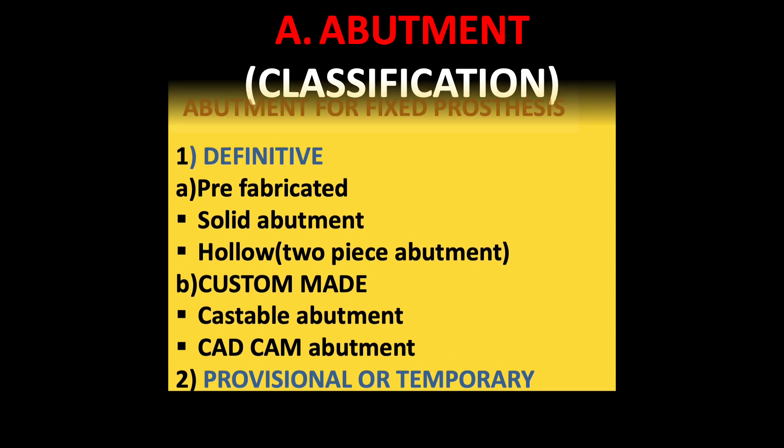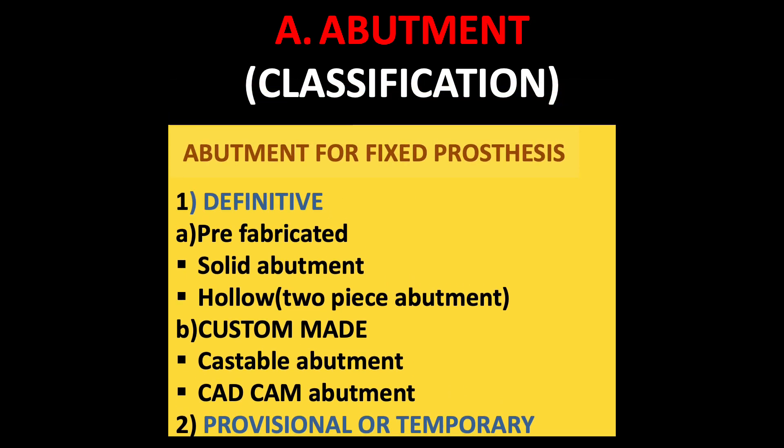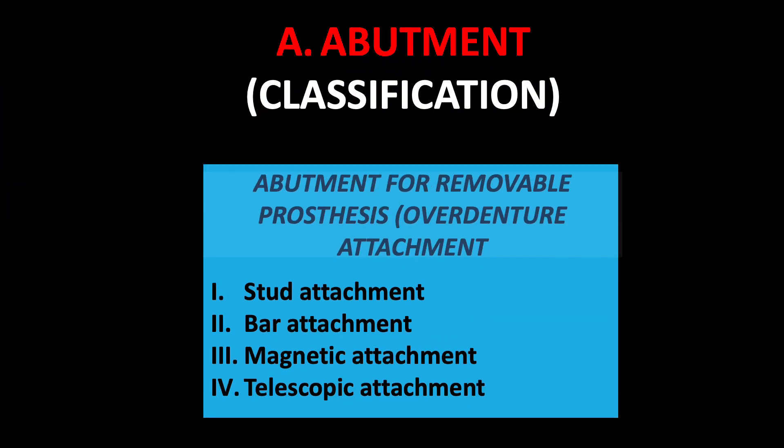Now the classification of abutment: we have two types. First is the abutment for fixed prosthesis, which has two categories — definitive and provisional. Under definitive, we have prefabricated, which can be a solid abutment or a hollow two-piece abutment, and in custom-made we have a castable abutment or a CAD/CAM abutment.